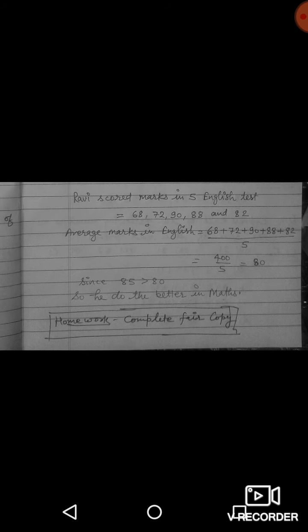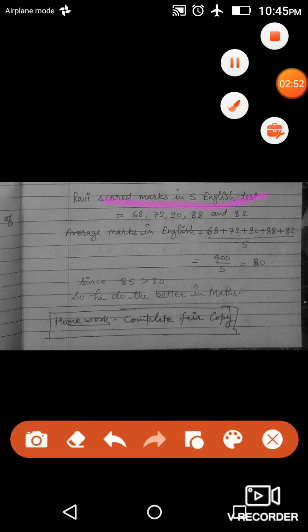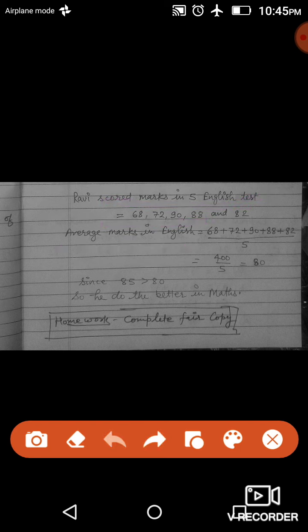Ravi scored marks in English: 68, 72, 90, 88, and 82. Average marks in English is equal to 68 plus 72 plus 90 plus 88 plus 82, we will add and divide by 5. We will add 400. 400 divided by 5 is equal to 80.